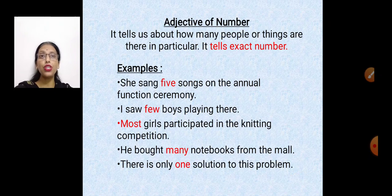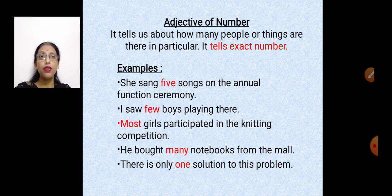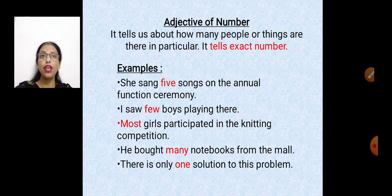Next comes adjective of number. It tells about the exact number — how many people or things are there. With quantity we were not aware of the exact number, but here it tells the exact number. 'She sang 5 songs on the annual function ceremony' — how many songs? We can count: 5 songs. 'I saw few boys playing there.'